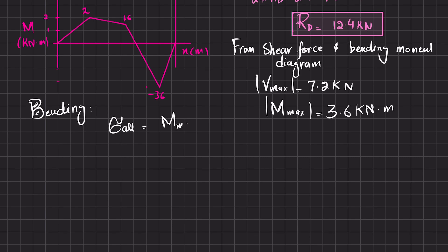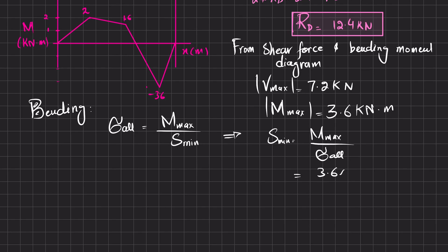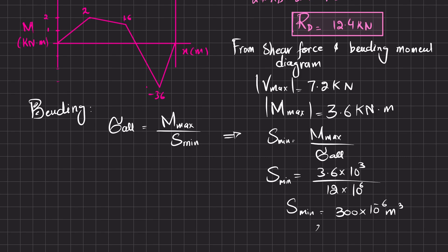Based on bending, the allowable bending stress equals the maximum bending moment divided by the minimum section modulus. So S_min = M_max / σ_allowable = (3.6 × 10³) / (12 × 10⁶) = 300 × 10⁻⁶ m³, which equals 300 × 10³ mm³.